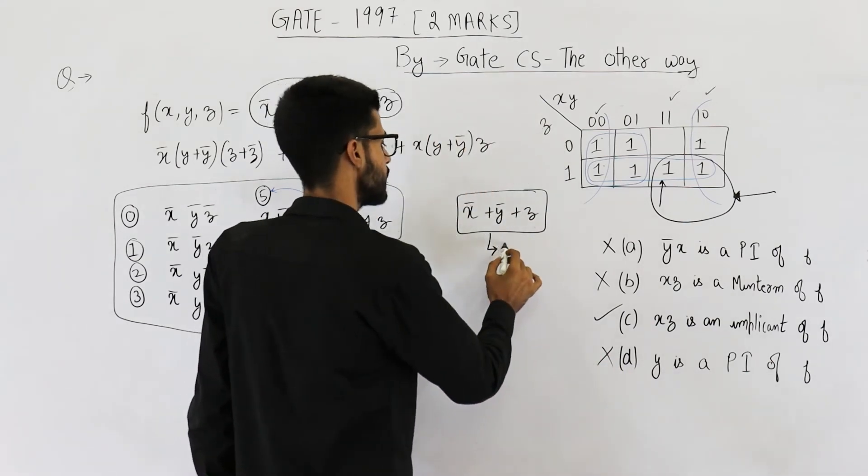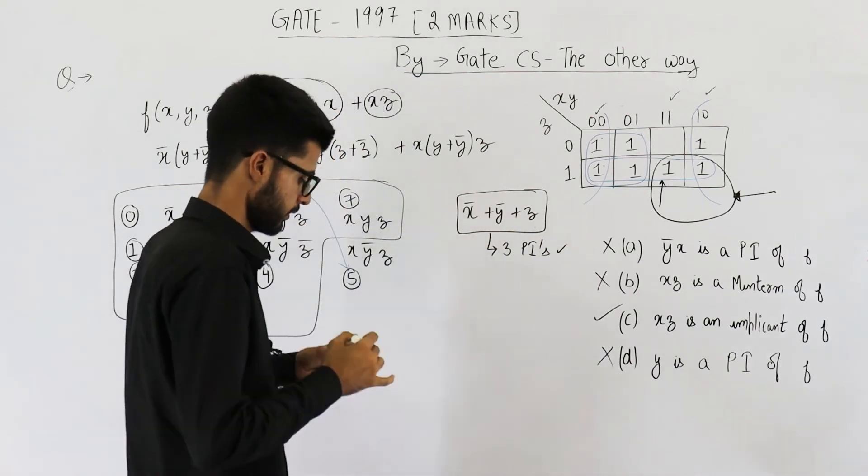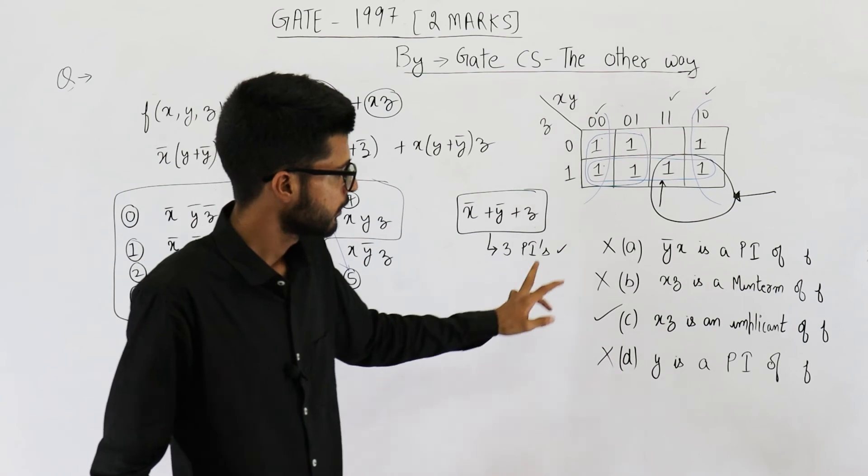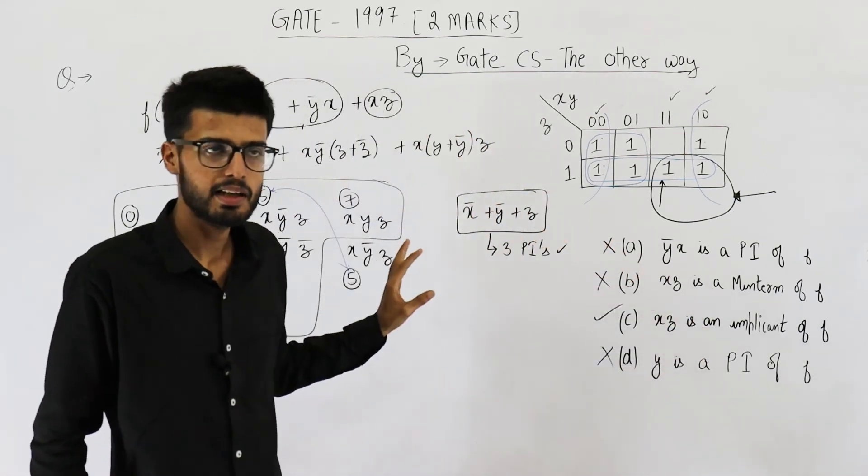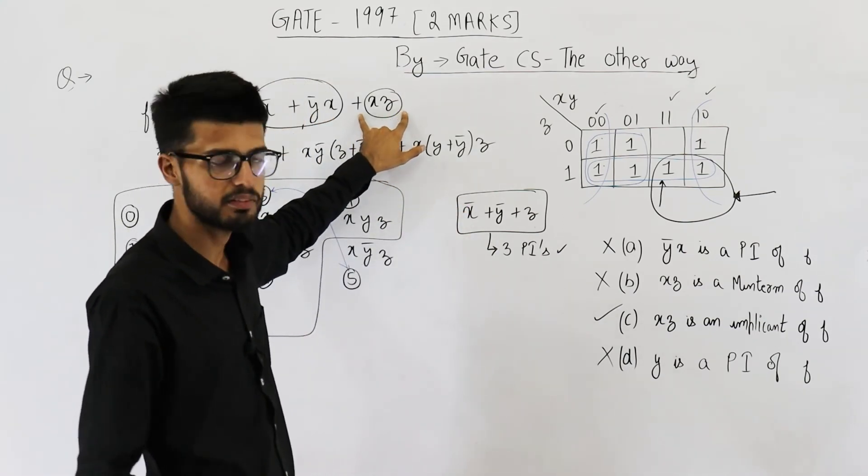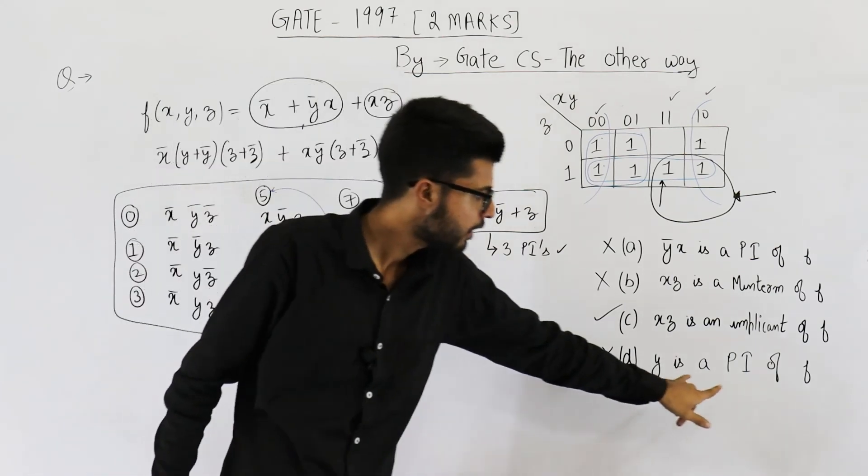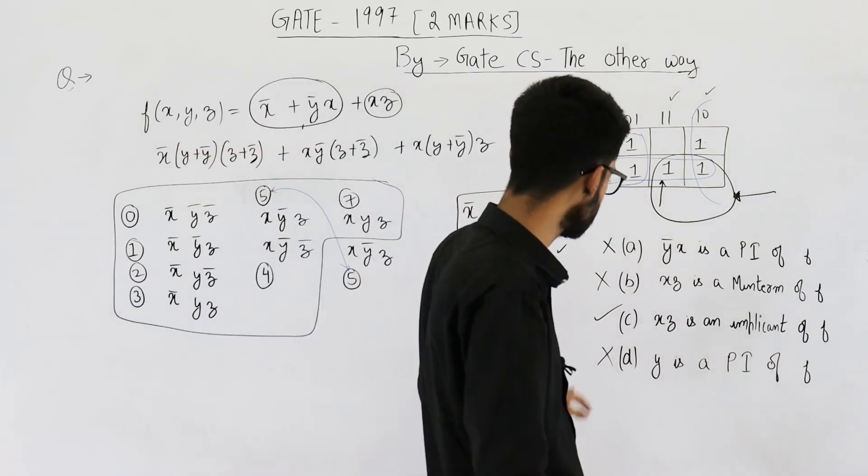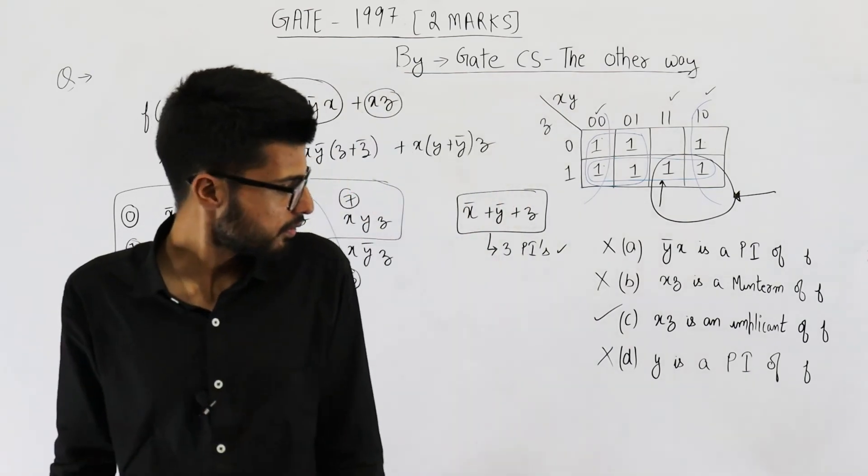So from here, you can see we have three prime implicants. Just let me repeat this point. For finding out implicant at any step or at any equivalent expression, even if it's not minimal, you can see if any term is present, that can be said as an implicant. But for finding out prime implicants, you'll always analyze the minimal one. So your answer is option C, x, z is an implicant of F.